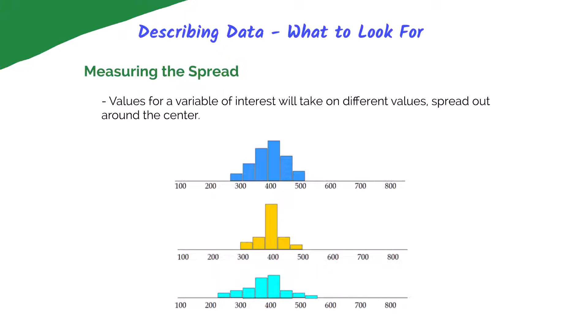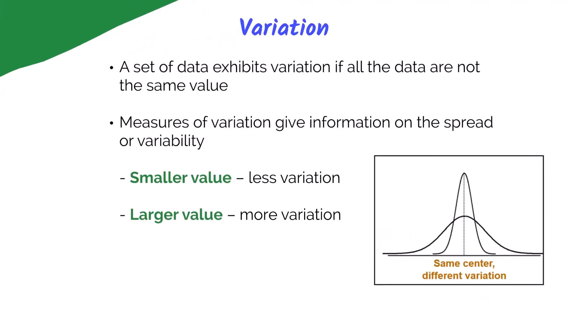When collecting data, we'll notice that the values of our variables of interest will take on different values. When we plot our data, it spreads around the center, so we want to see how that spread occurs. Variation occurs because not everything in our data set will have the same value. It will vary depending on a variety of factors. So when we're measuring variation, it is giving us information about our spread or how different they are from each other.